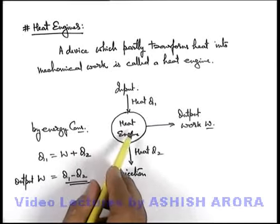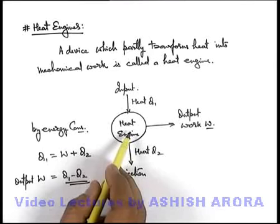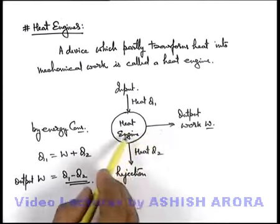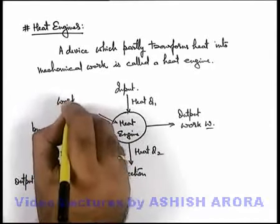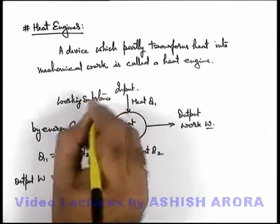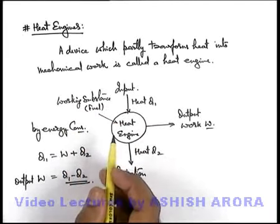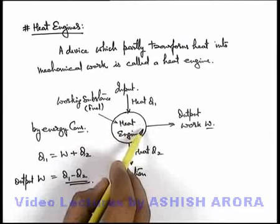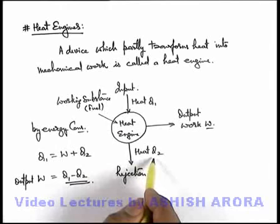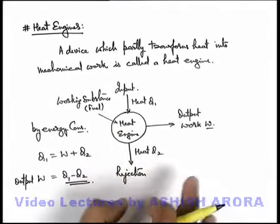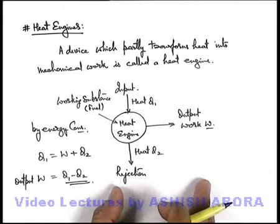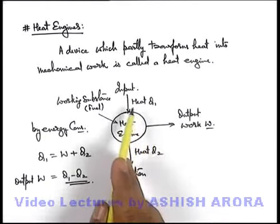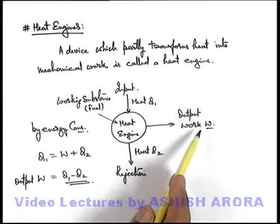This heat engine is basically a gaseous system in which the gas or fuel used for absorption of heat, rejection of heat, and doing work is called the working substance. This working substance is actually the fuel of the heat engine. It starts from an initial state where it accepts heat Q1 from the input source, does some work, comes back to the initial state, and rejects an amount of heat Q2. The components of energy involved are: input heat, rejected heat, and the work done by the heat engine.